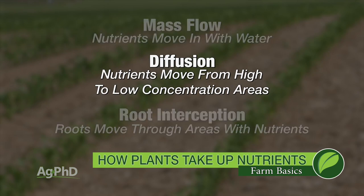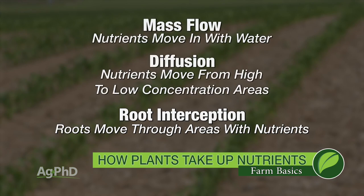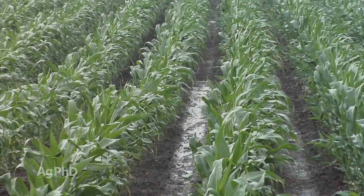There's also diffusion and root interception. Diffusion is when you've got a higher concentration of a nutrient in one area and it moves to an area of lower concentration. With root interception, the root intercepts or gets right into that area of nutrient and pulls it in that way. Mass flow is the main way that we'll always talk about here on Ag PhD because that's how pretty much all nutrients are going to get into plants, other than phosphorus. Phosphorus's main way in is diffusion, but all the rest of them it's mass flow.